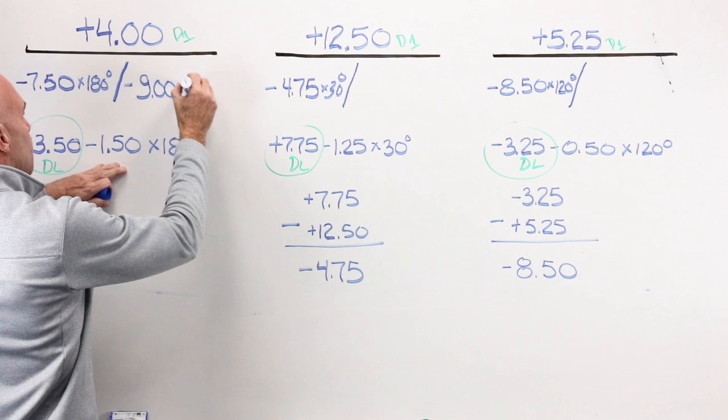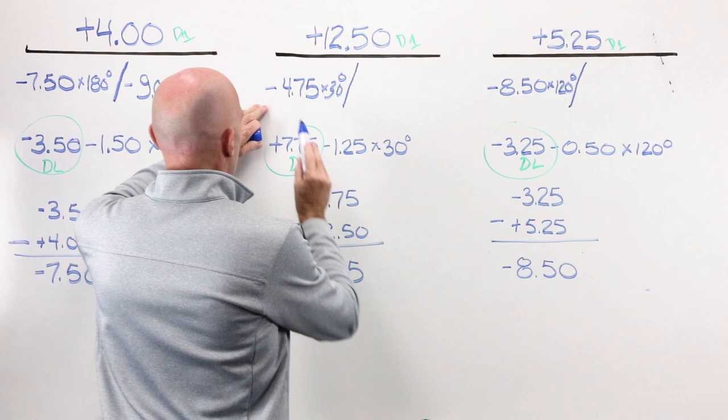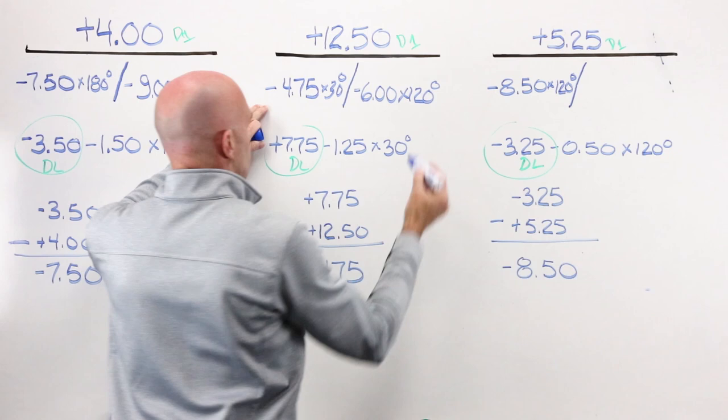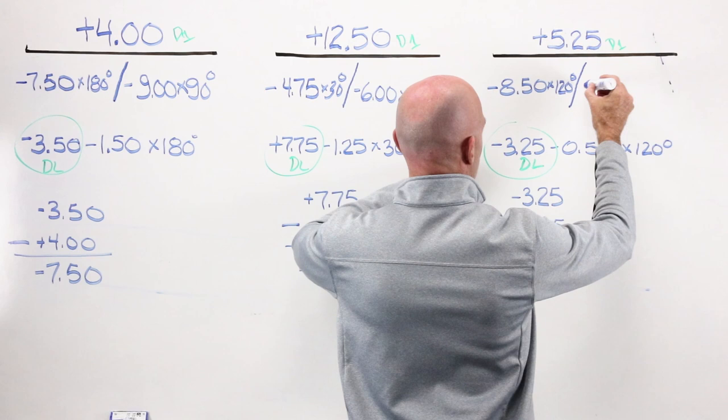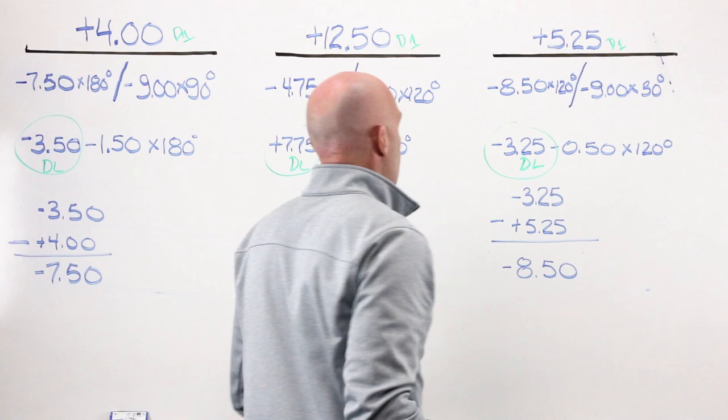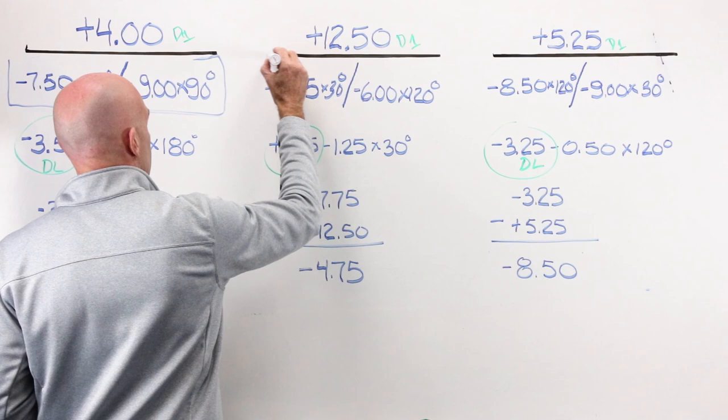I'm going to have 4, 5, I'm going to have minus 6, 1.25 diopters stronger, at 120 degrees. I'm going to have minus 8.50 and 50 stronger. I'm going to have minus 9 at 30 degrees. There is my complete answer. Here is my complete answer. There is my complete answer.